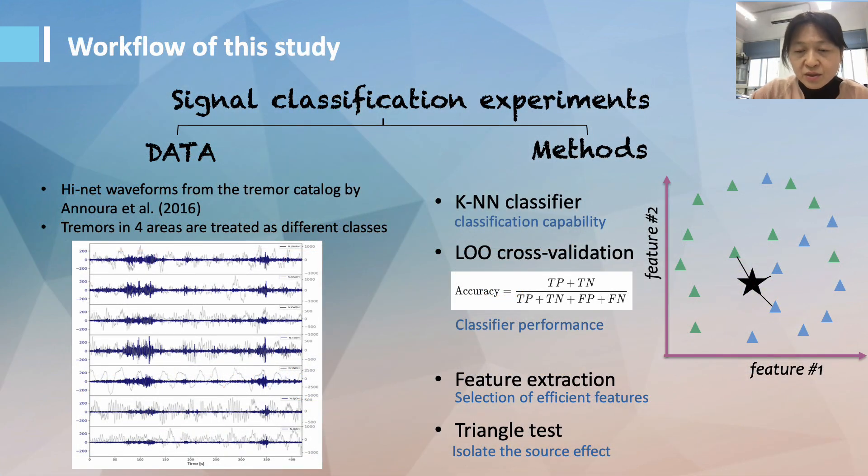And to answer the question, we conducted signal classification experiments in Shikoku using tremor catalog published by Obara et al. in 2016 and used high net waveforms data. The tremor waveforms are segregated into 62-second segments for one event, as shown by the figure on your left-hand side.